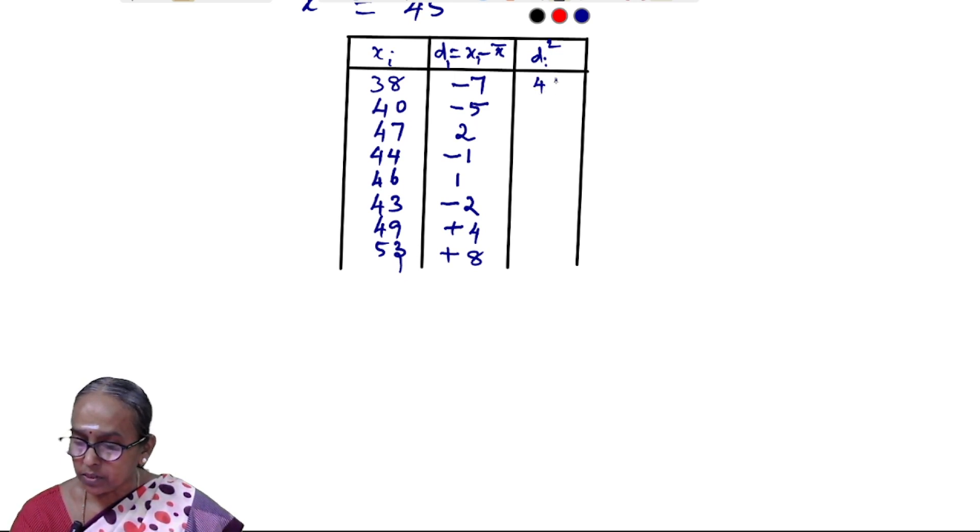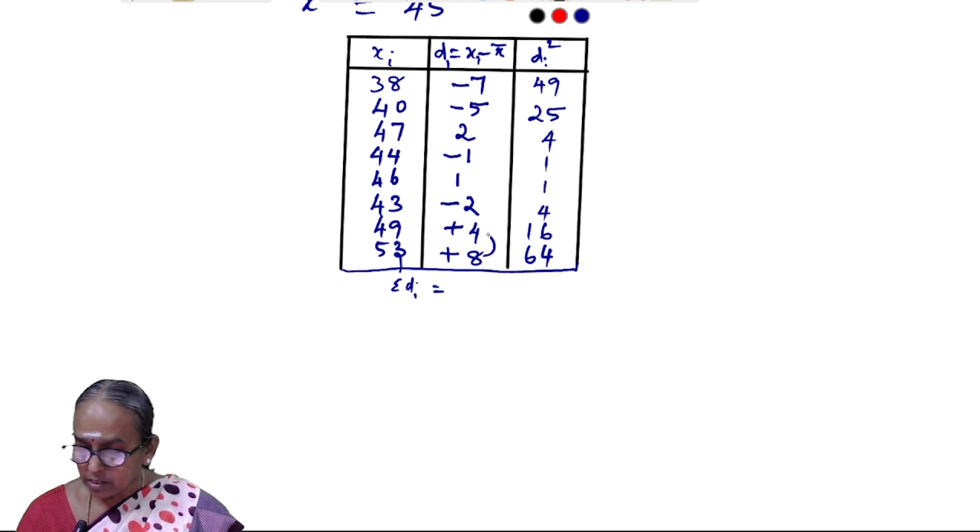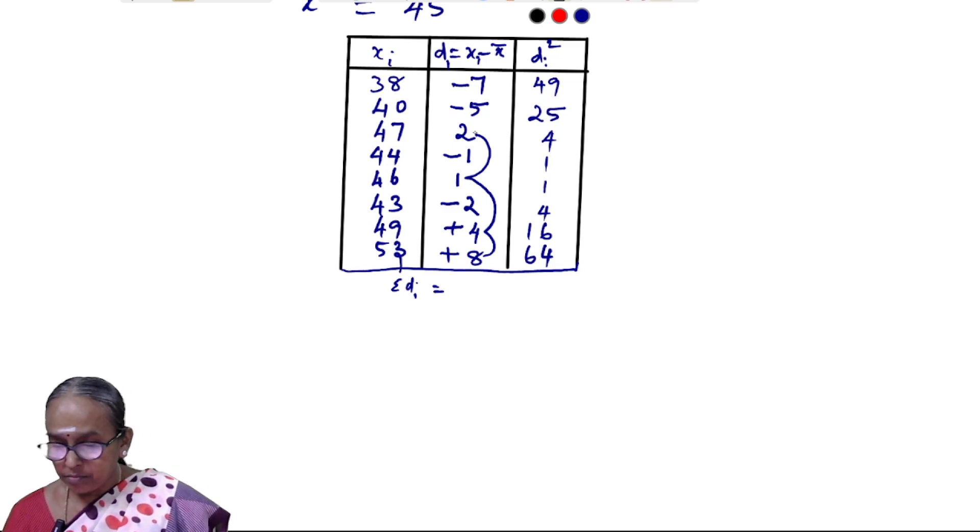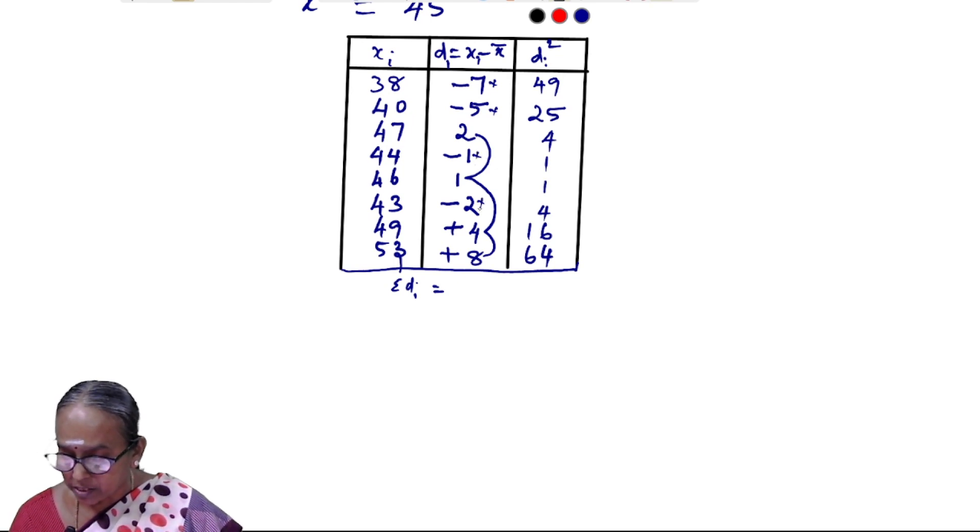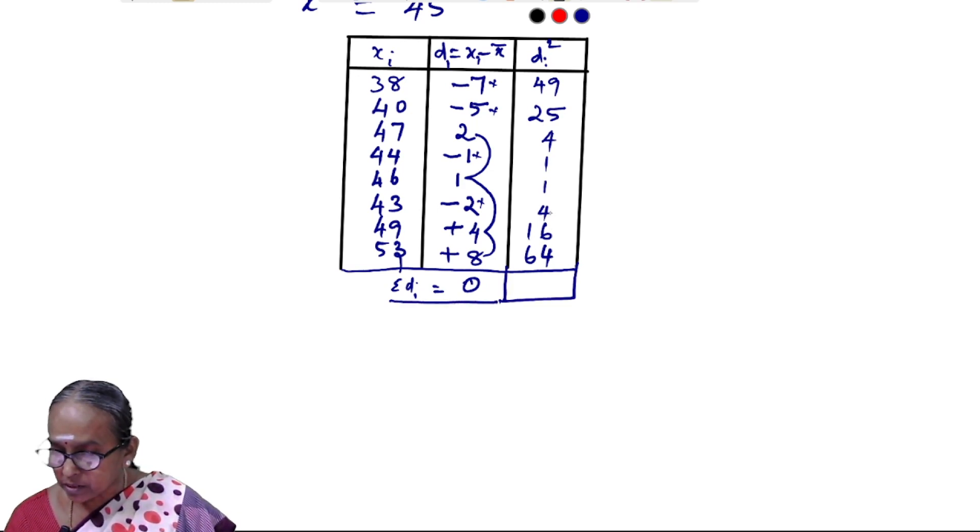Taking the summation, we get: 49 plus 25 plus 4 plus 1 plus 1 plus 4 plus 16 plus 64 equals 164.